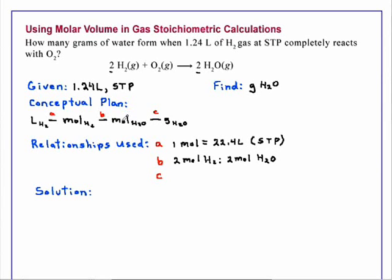Once we have the moles of water, we can convert that to grams using the molar mass of water, which is 18.02 grams per mole. So we're ready to solve the problem.